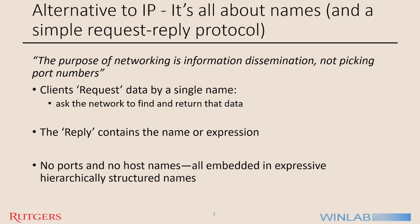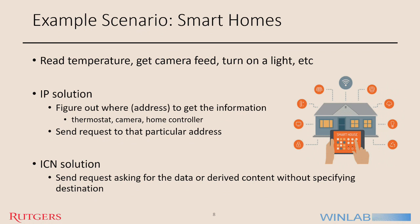To make this more concrete, consider an example scenario of smart homes. The application is to read temperature, get camera feed, turn on a light, etc. The existing IP solution is: figure out where to get this information from — I want this from a thermostat, a camera — and send that request to that particular address. But with content-centric or information-centric networking, you just send the request asking for the data; you don't specify where to get it from. This allows us to build abstract network services such as multi-homed devices and groups of objects. A single network object may consist of multiple devices or have multiple interfaces. The service abstraction is inherently multicast in nature and is thus well suited for wireless environments.